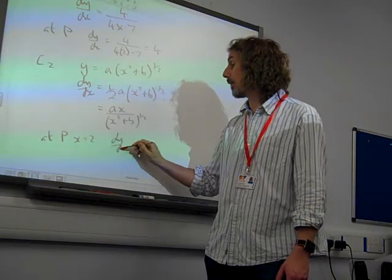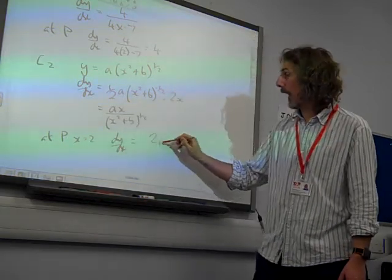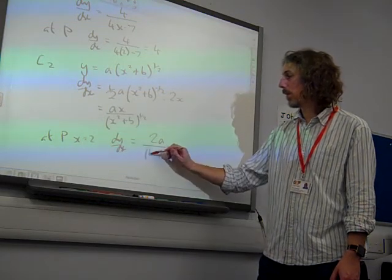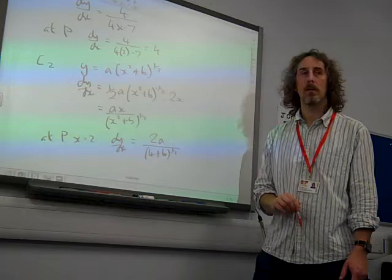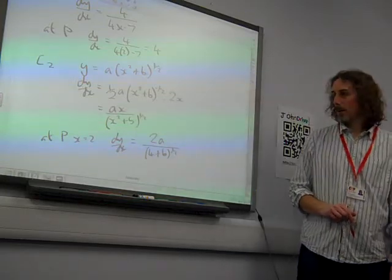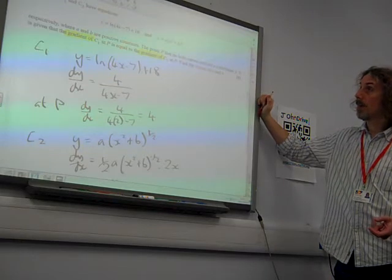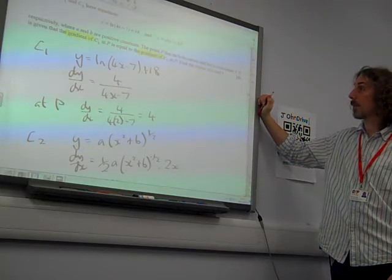So we have 2x here as being 2a over, what is that, 4 plus b to the power of a half. Right. So we've got, what did it say? The other curves, the point P lies on both curves.